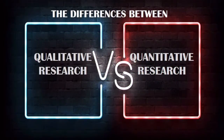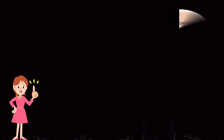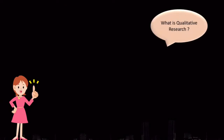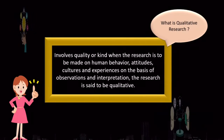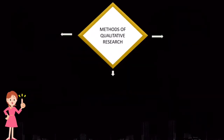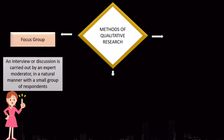The topic is the differences between qualitative research versus quantitative research. Qualitative research involves quality or kind, when the research is to be made on human behavior, attitudes, cultures, and experience on the basis of observations and interpretation. There are three methods of qualitative research: focus group, interview or discussion,